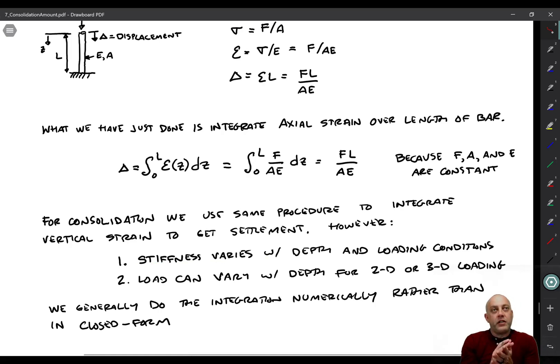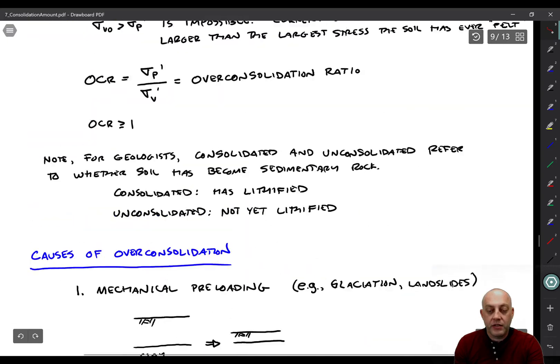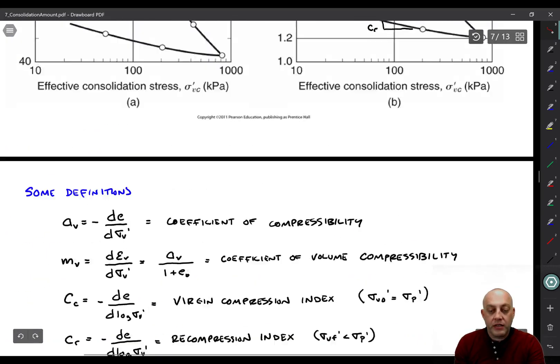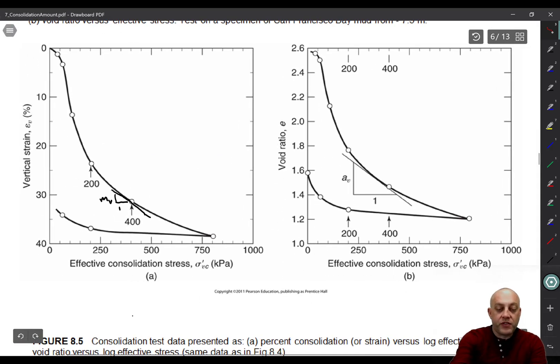And the reason for that is that the stiffness of the soil varies with depth. If you recall, when we plotted vertical strain versus effective consolidation stress, or void ratio versus effective consolidation stress, the slope of this line, that's equal to the stiffness. So if we want to compute the change in void ratio, we would need to integrate this A sub V over some loading increment. Well, you can see that varies a lot here. So in general, A sub V is going to vary with depth.